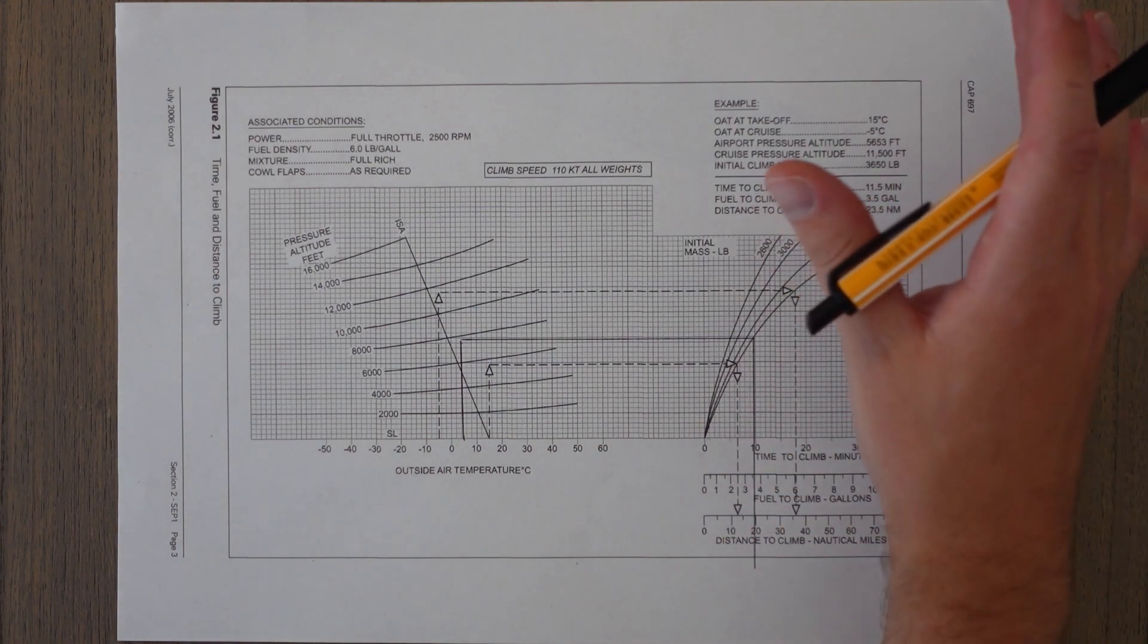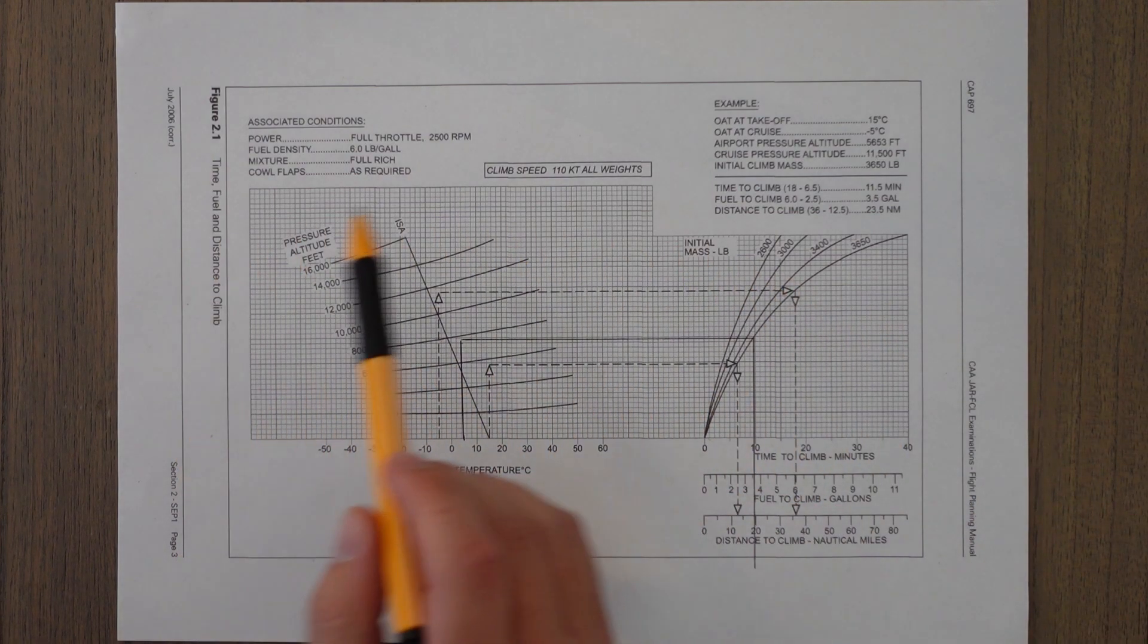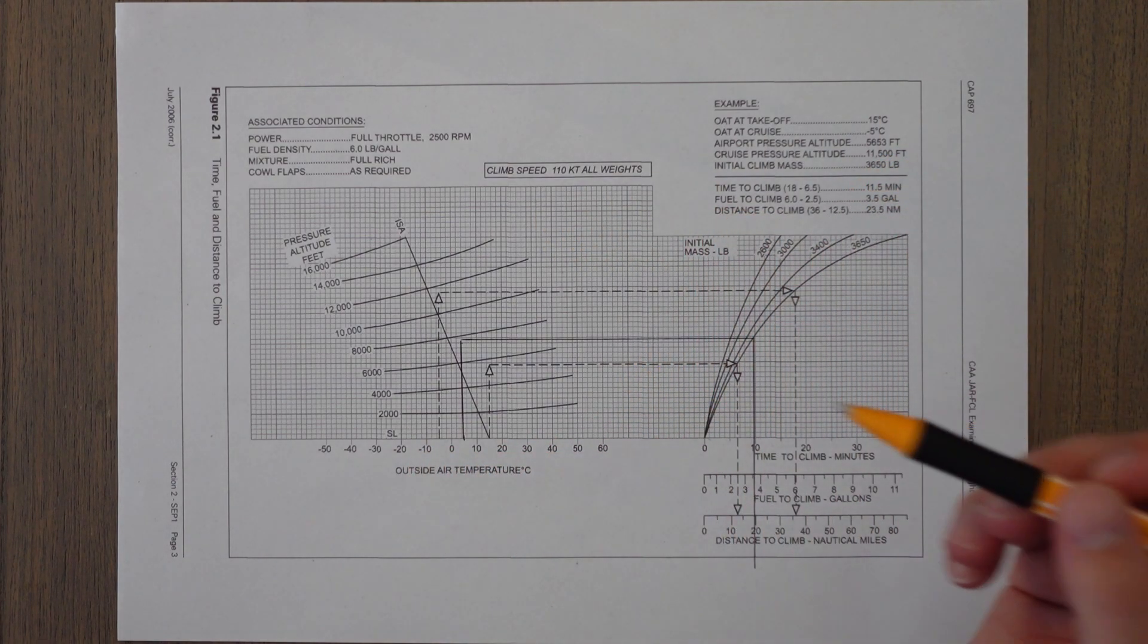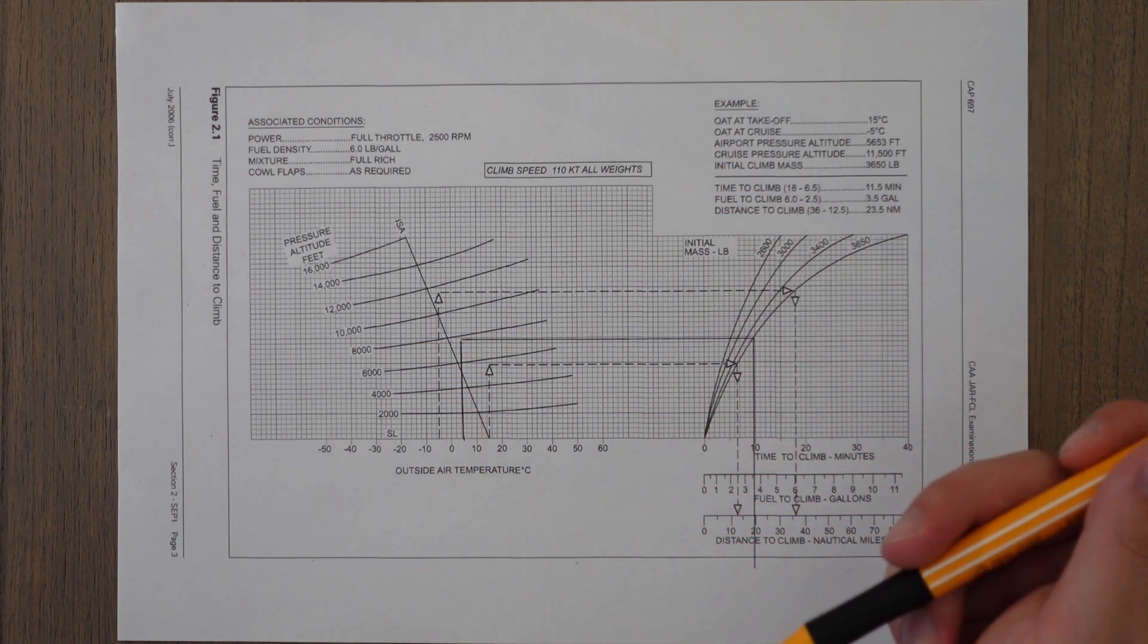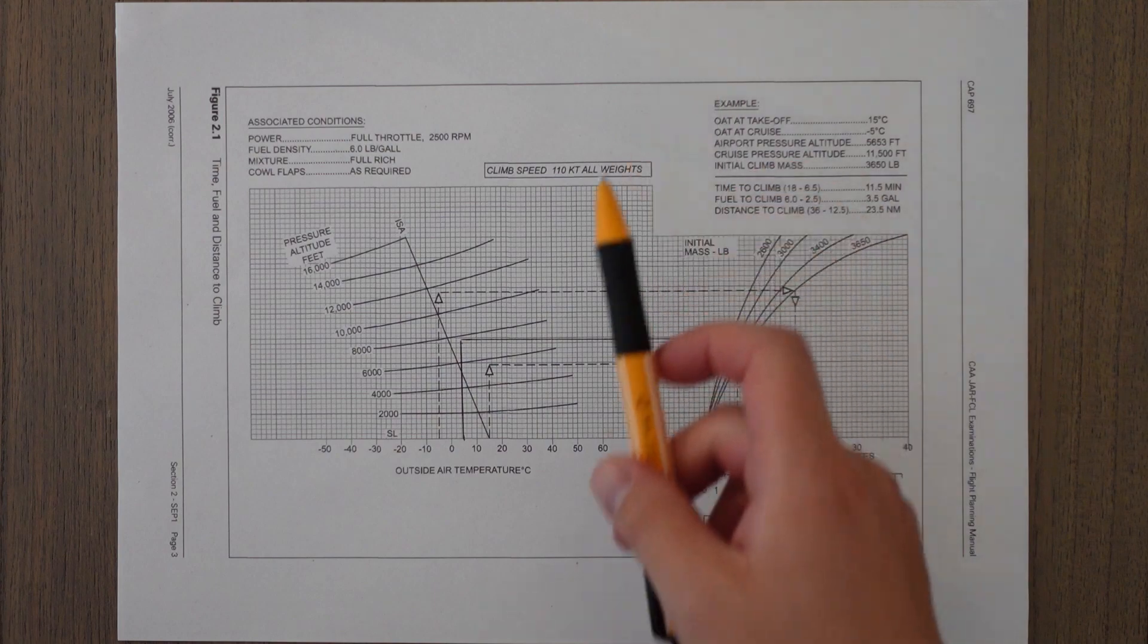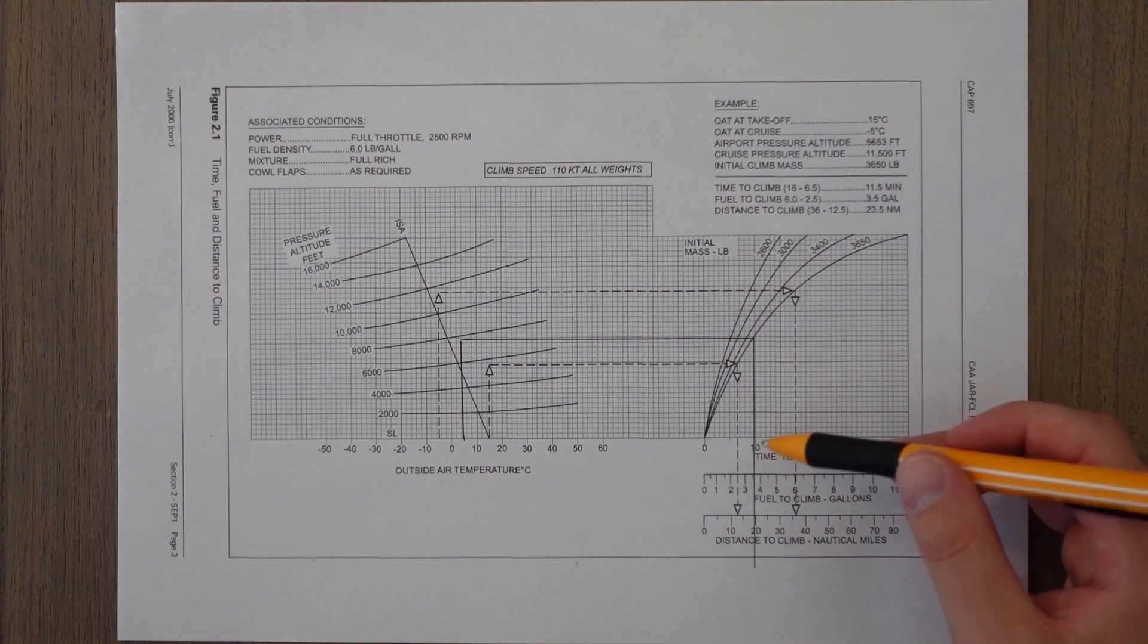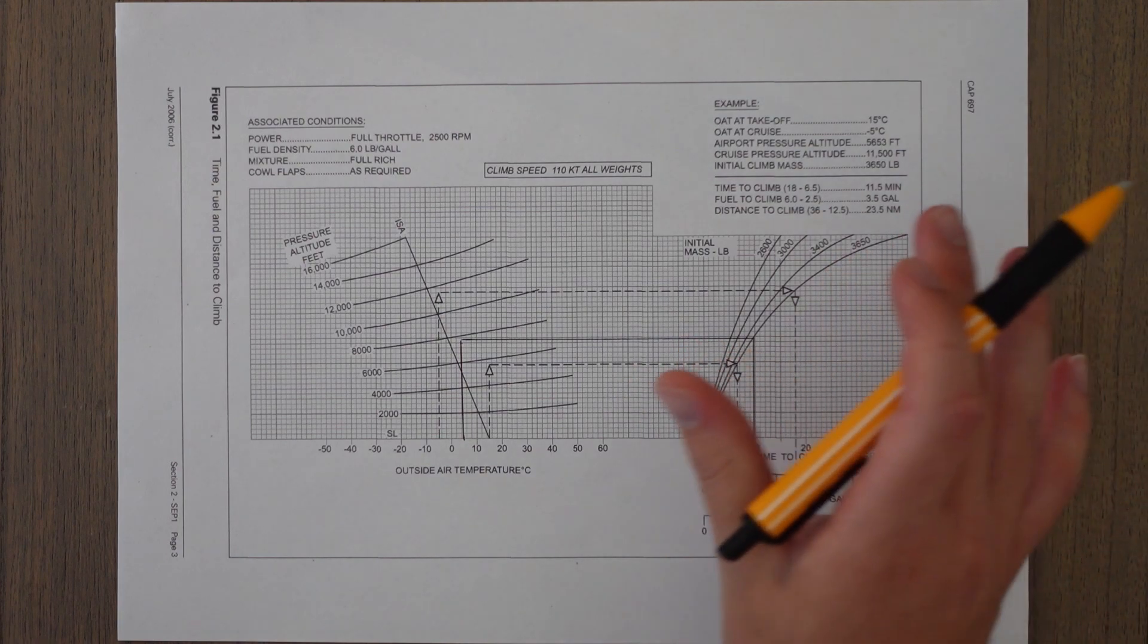Something to note about these graphs is they don't factor in any wind at all. So this is when we're climbing with a true airspeed of 110 knots at all weights. We know that we have a headwind of 20 knots, so our ground speed would therefore be 90 knots. Headwind and tailwind components only act in the horizontal plane, so our vertical speed that we climb up to flight level 075 will be unaffected.